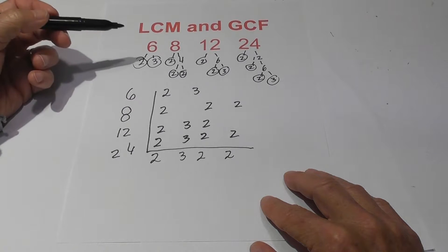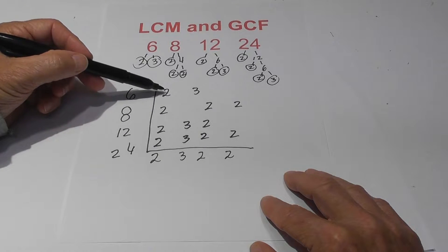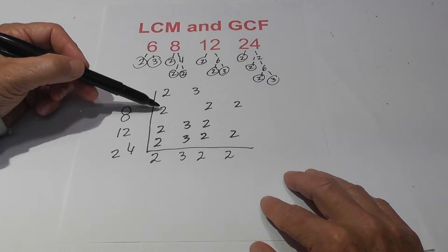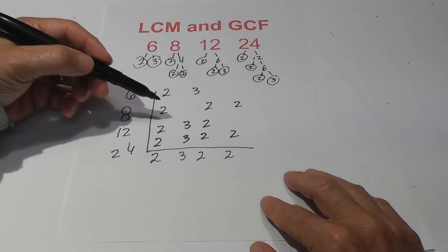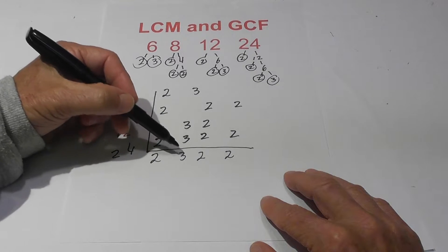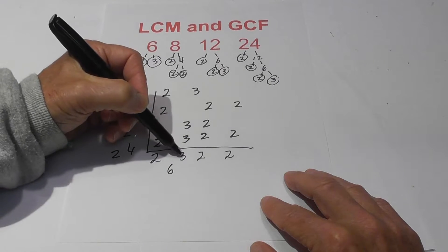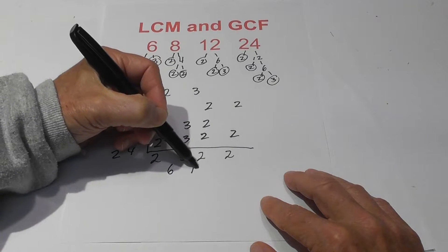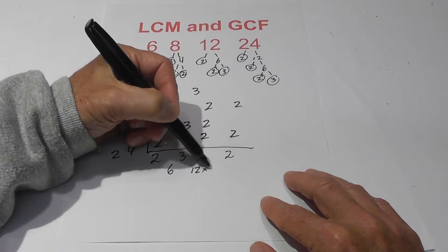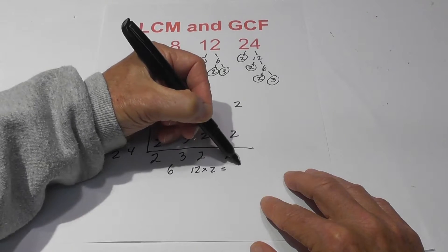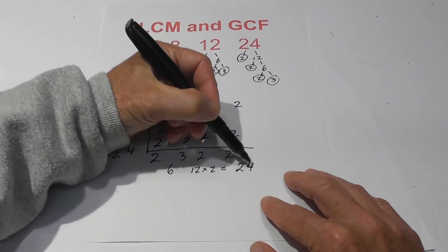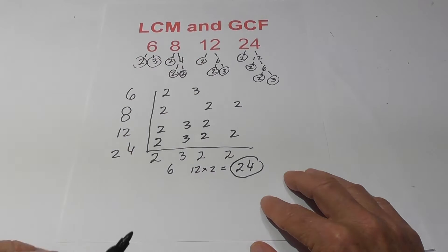Now if you had three numbers, you would do the same thing, except instead of having four numbers maybe in one column, you'd have three as the maximum. Now all we do is multiply this together. So we have two times three is six, and then six times two is twelve, and twelve times two equals twenty-four. So the LCM of six, eight, twelve, and twenty-four is twenty-four.